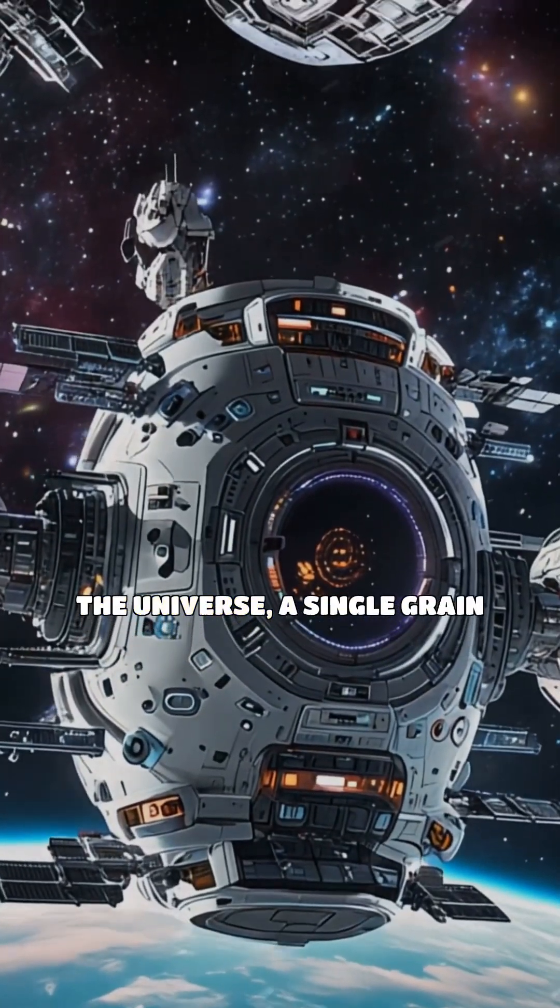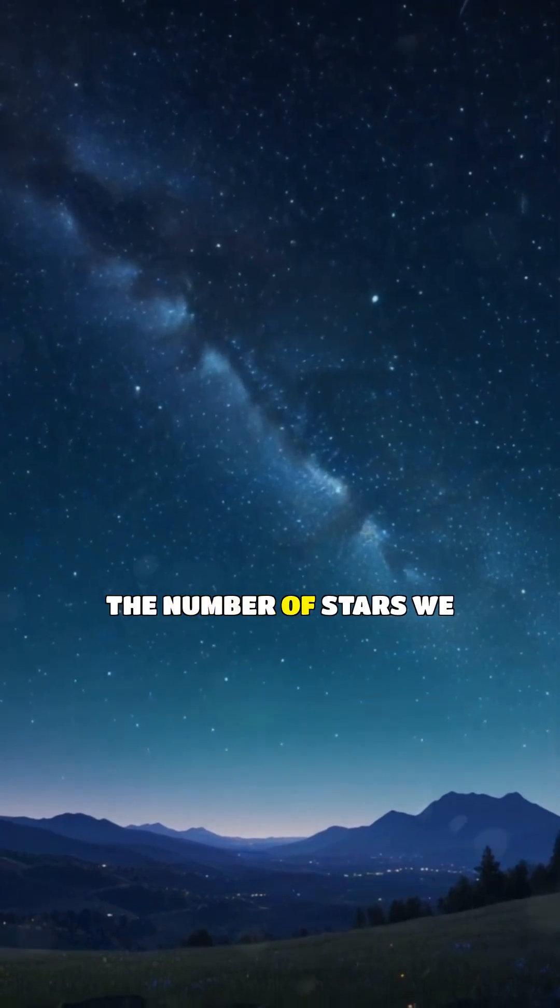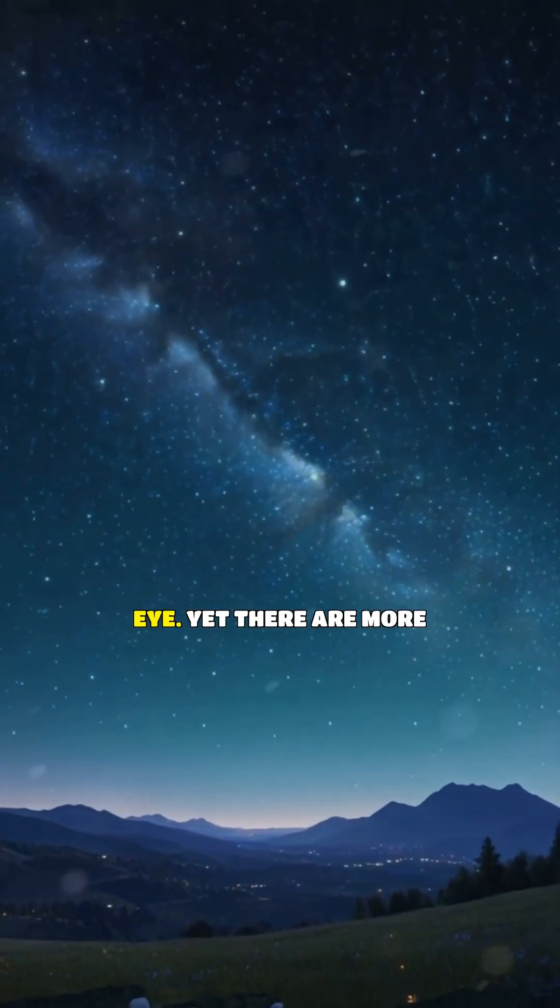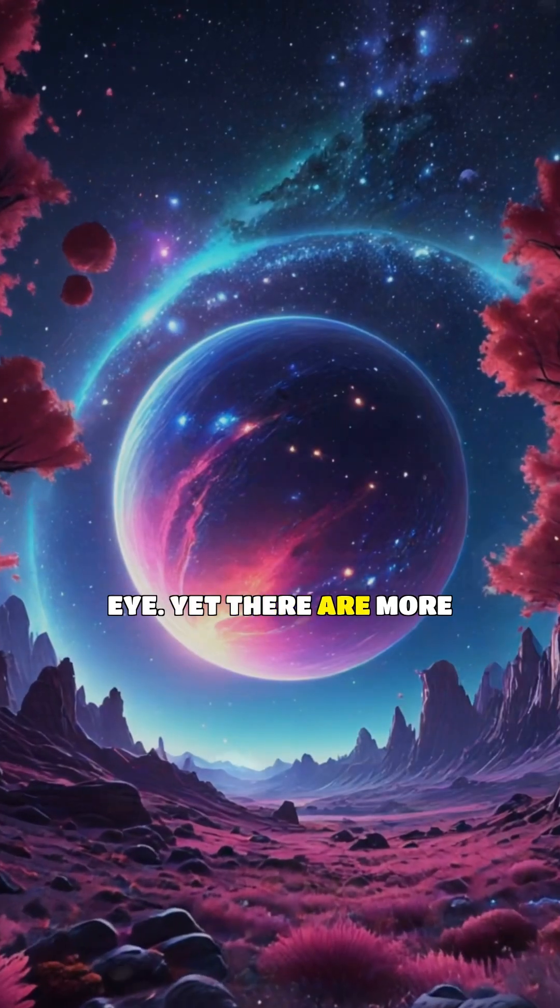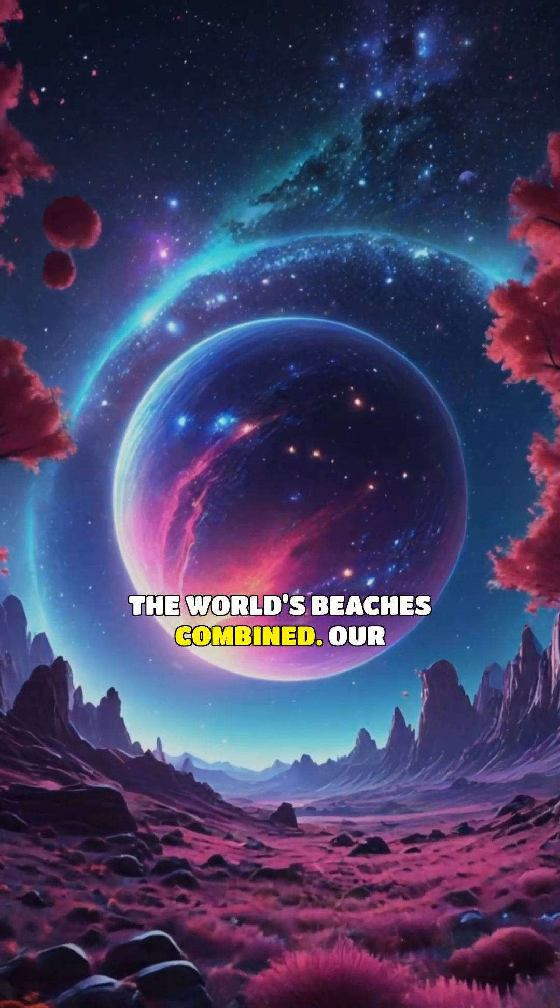In the vast expanse of the universe, a single grain of sand on Earth represents the number of stars we can see with the naked eye. Yet, there are more stars in the cosmos than grains of sand on all the world's beaches combined.